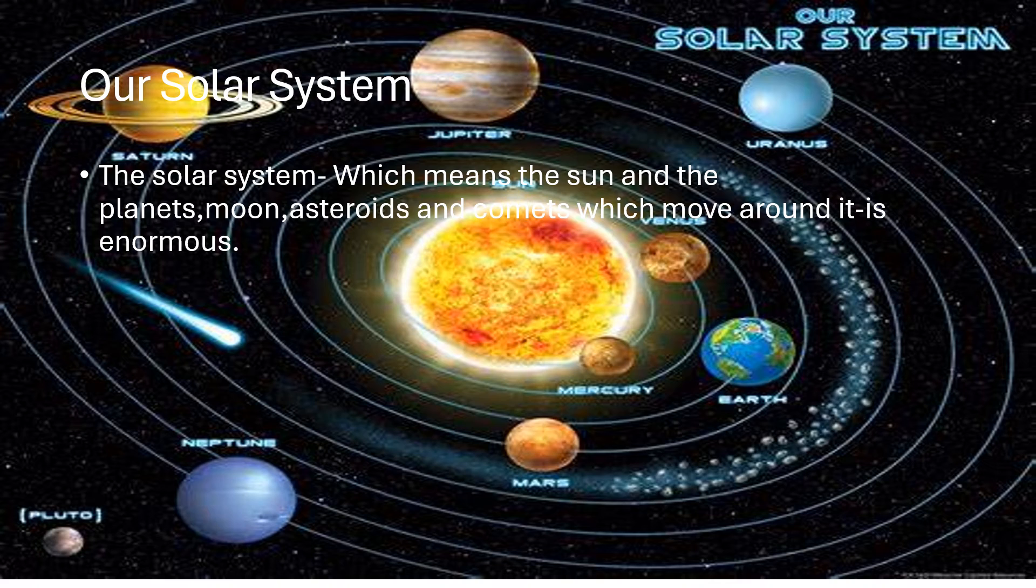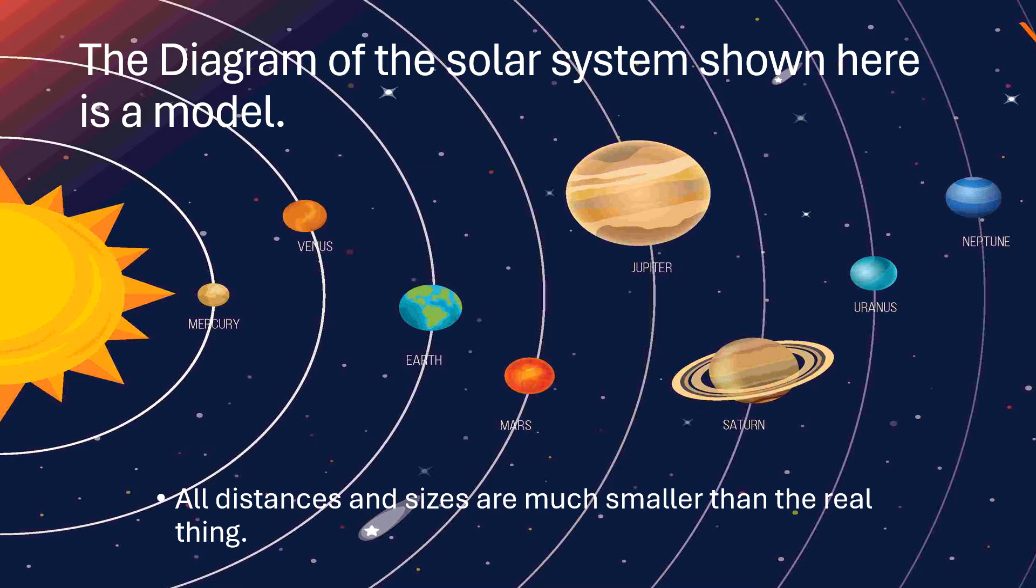Our solar system: The solar system, which means the sun and the planets, moon, asteroids, and comets which move around it, is enormous. The diagram of the solar system shown here is a model. All distances and sizes are much smaller than the real thing.